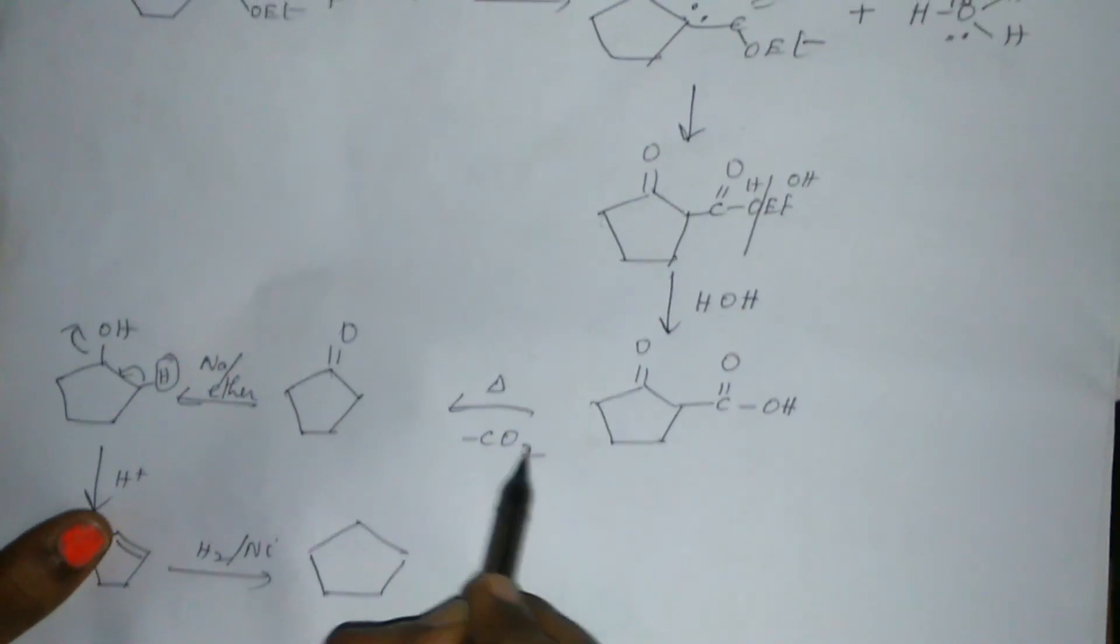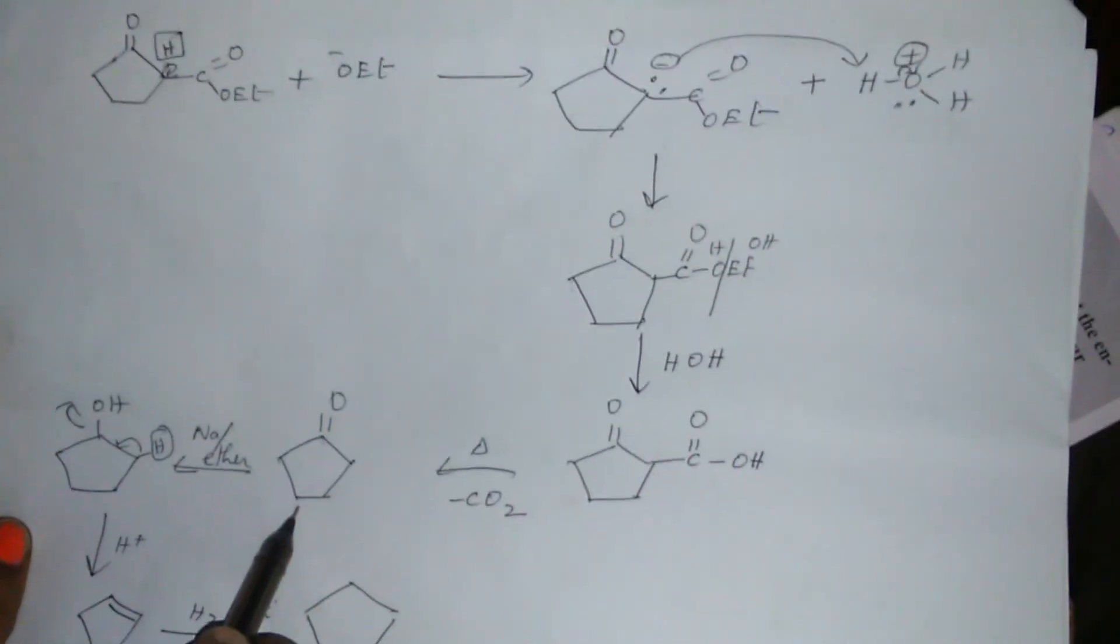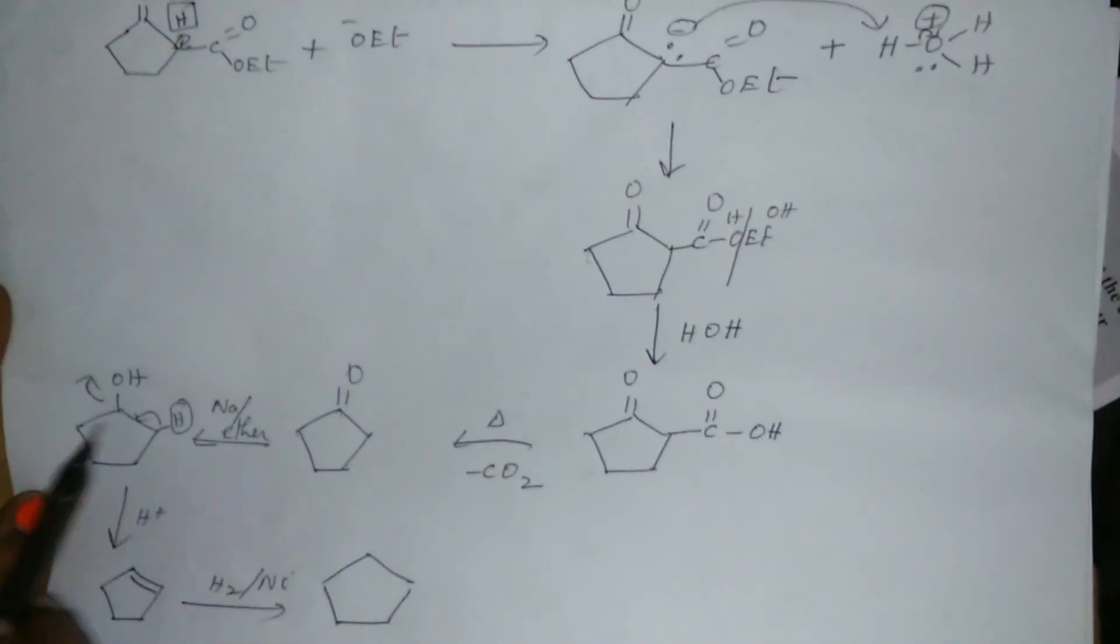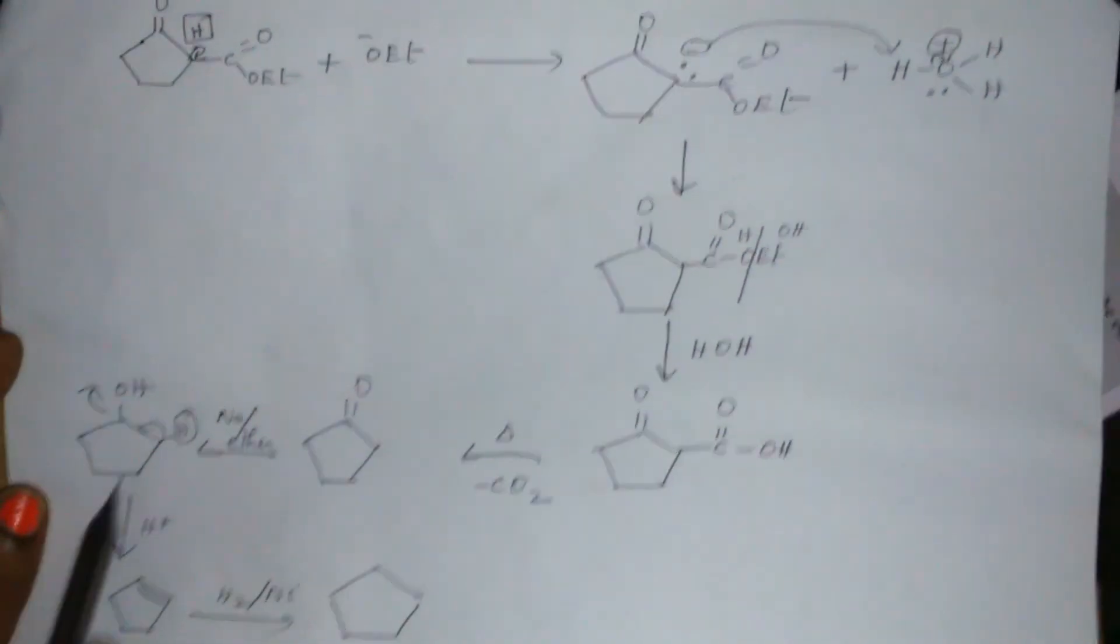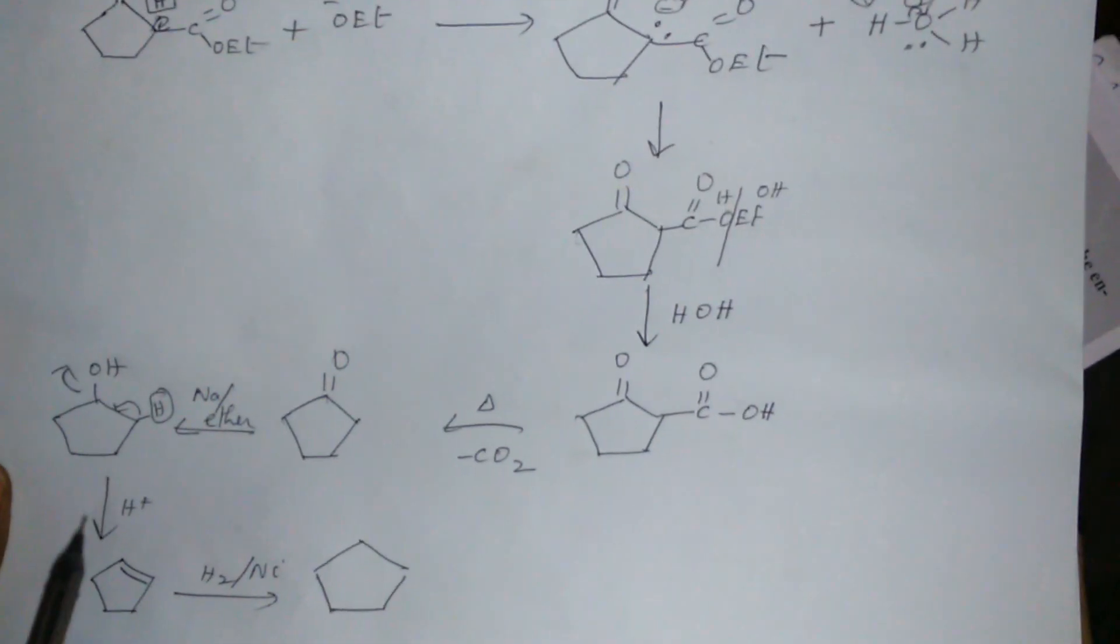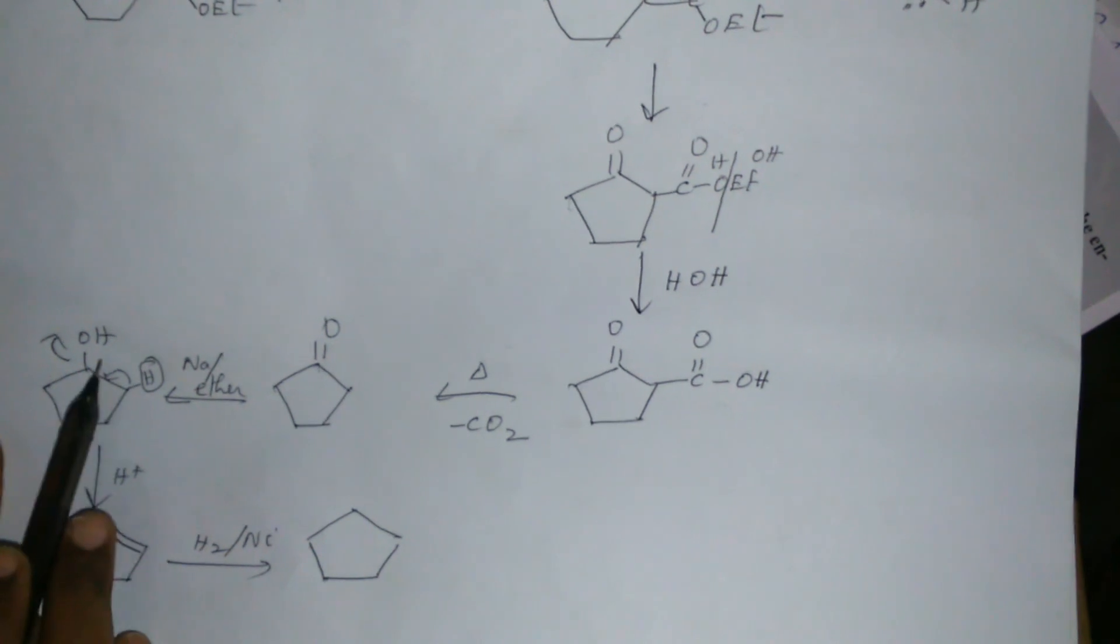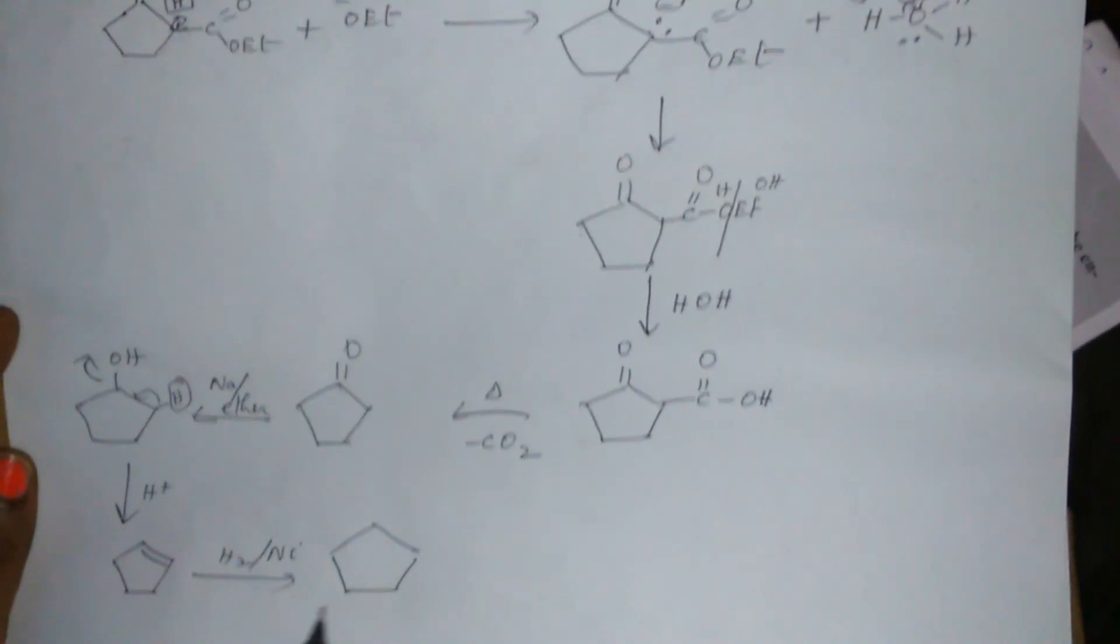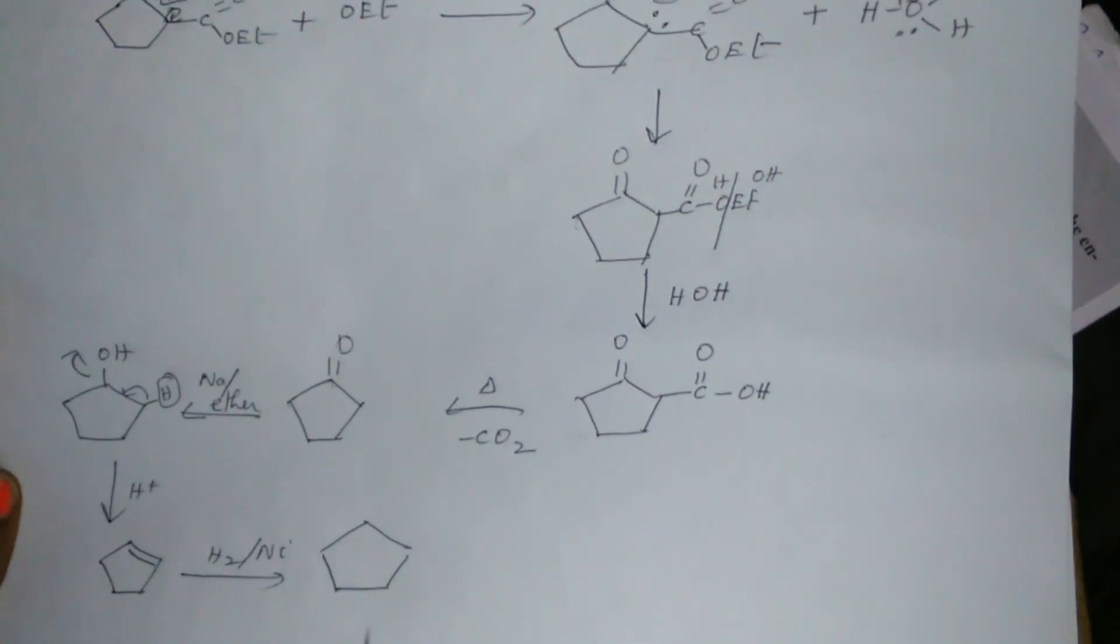On heating, carbon dioxide is eliminated, giving cyclohexanone. Followed by reduction, it converts the cyclohexanone to an alcohol, and dehydration takes place, therefore water is eliminated to get an alkene, which on further reduction gives cycloalkane. Thank you very much.